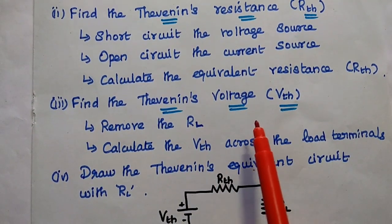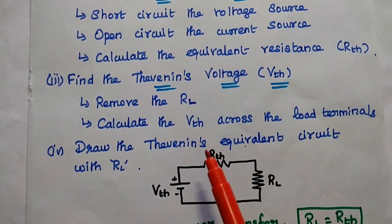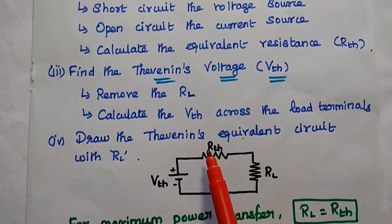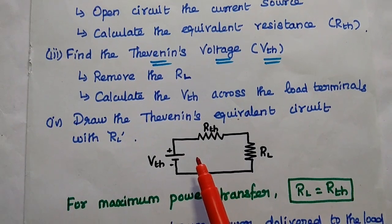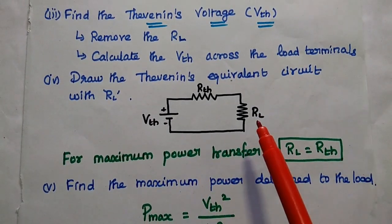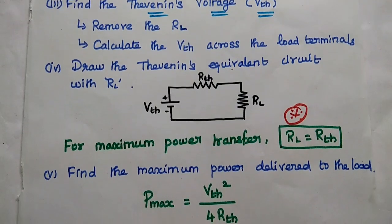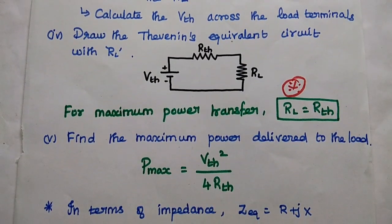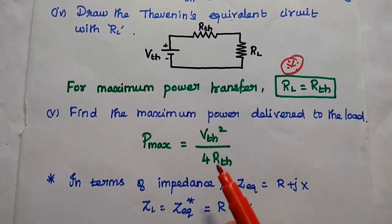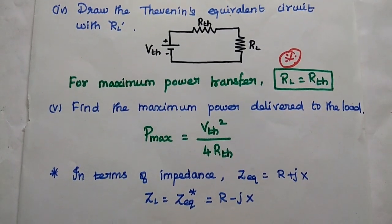The next step is to find the Thevenin's voltage: remove the load resistor from the given circuit and calculate the Thevenin's voltage across the load terminal. After getting VTH and RTH values, draw the Thevenin's equivalent circuit with the load resistor, and for maximum power transfer set RL = RTH. Then the maximum power delivered to the load is given by the formula: P_max = VTH² / (4 × RTH).